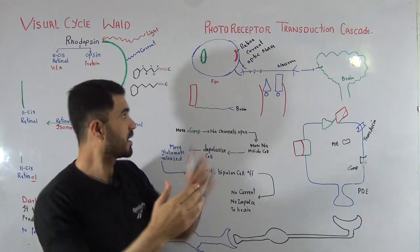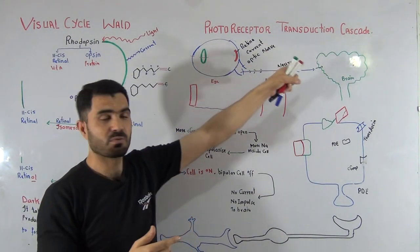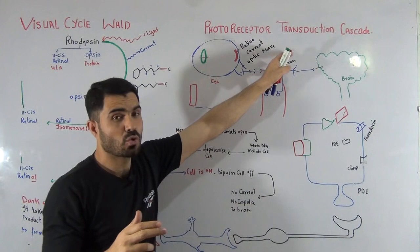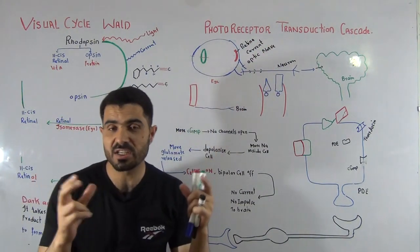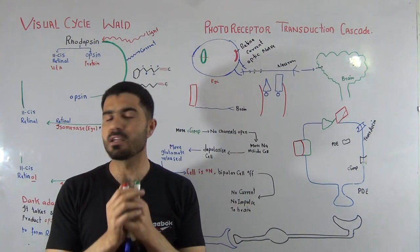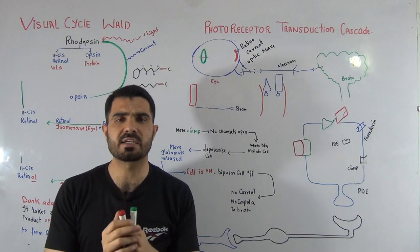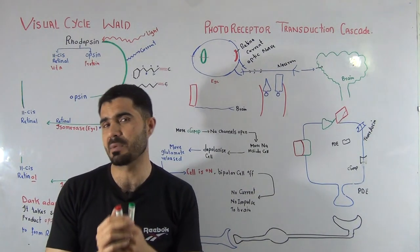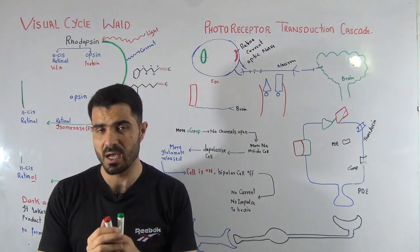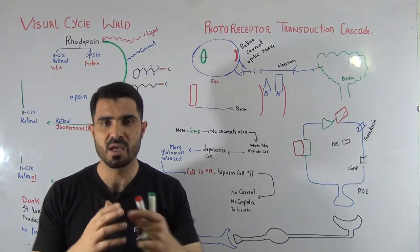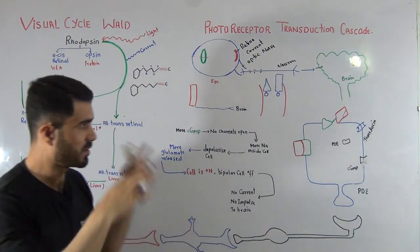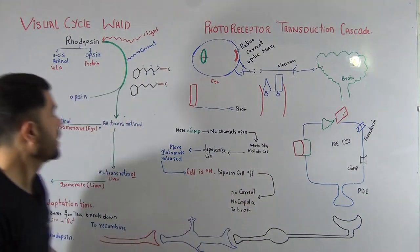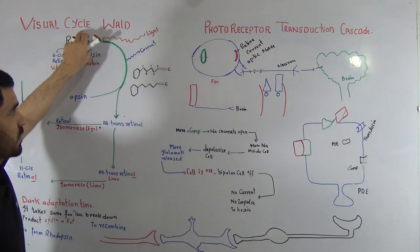In the first video lecture, only the visual cycle will be discussed, and in the next video lecture, photoreceptor transduction will be discussed. Remember that these two topics are closely related, and if you want a crystal clear idea of how vitamin A is involved in vision and how nerve current is produced, you should watch both videos together.